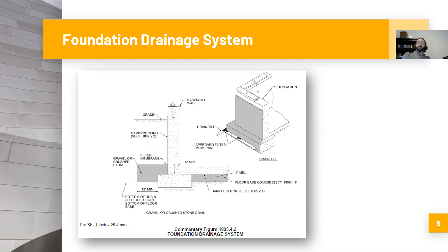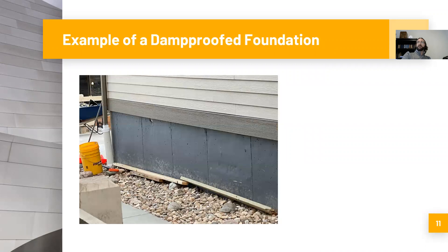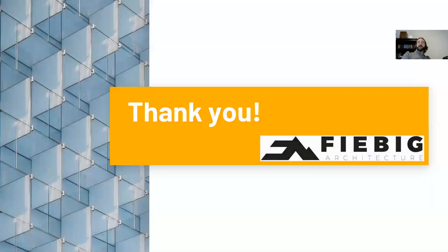Here is an example of a waterproofed foundation — typically waterproofing is a darker color, thicker, sometimes black; it's a more robust treatment. Here is an example of a damp proofed foundation — typically a lighter color, not as thick, not as robust. It's important to know that visual observation alone is not always sufficient to determine whether you're looking at a waterproofed or damp proofed foundation, but generally if it's a really thick, dark system it's likely waterproofing, and if it's a thinner coating it's likely a damp proof system.